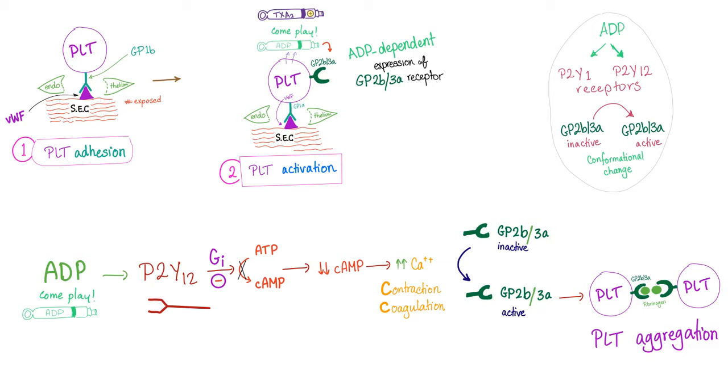Now you know how important the P2Y12 receptor is to the process of platelet aggregation. Now imagine if there was a class of medications capable of inhibiting P2Y12 receptor and therefore inhibit platelet aggregation and prevent thrombosis. That would be wonderful. Wait, it already exists? Yes. It's called P2Y12 receptor inhibitors. Medications such as clopidogrel, prasugrel, ticlopidine, and ticagrelor. Who in his right mind named these things?